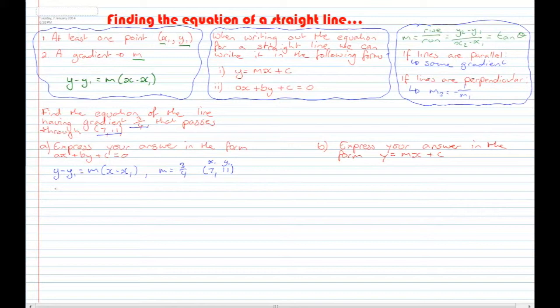Alright, let's substitute in now. So we've got Y - Y1 being 11, write in brackets, is equal to M being 3/4, bracket X - X1 being 7, close bracket.